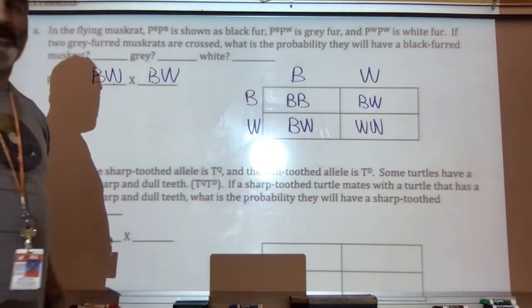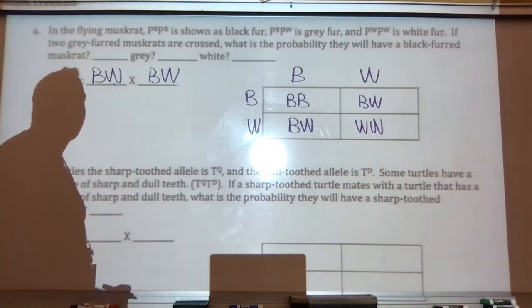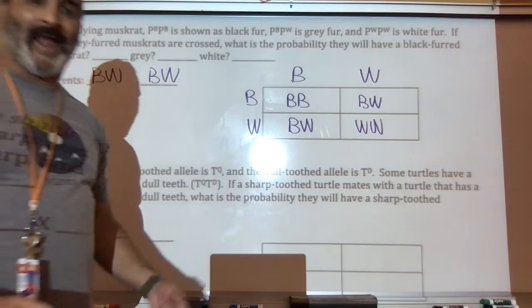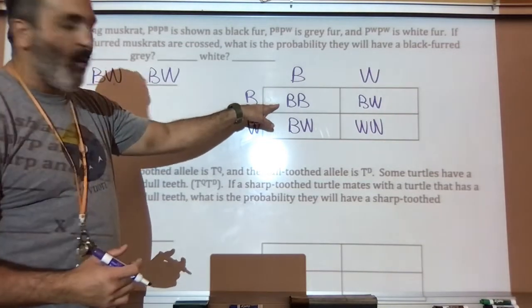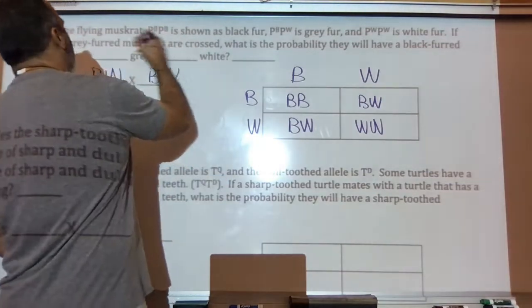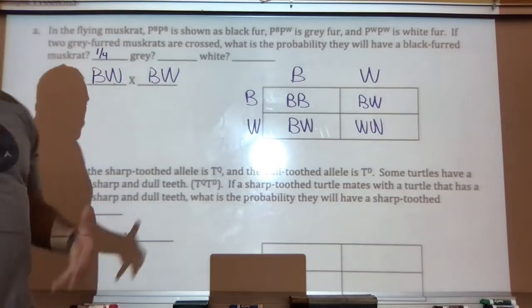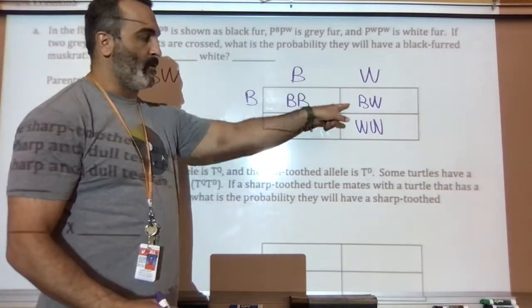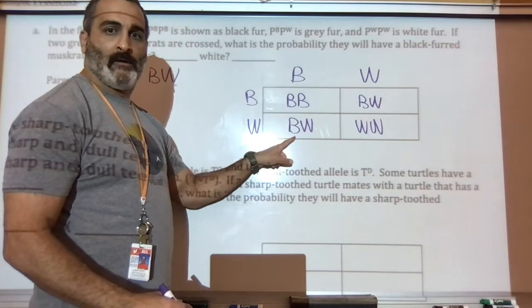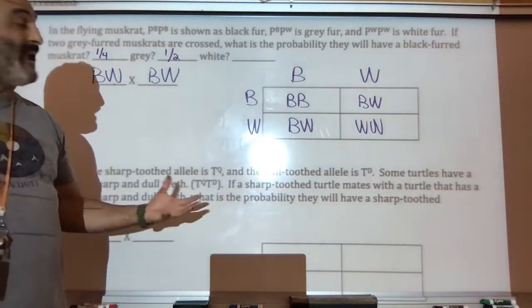That's what it ends up looking like. Here's the first question. What is the probability they will have a black furred muskrat? Well, black needs two uppercase B's. We have one of them that is black. The answer would be one-fourth. Gray. How many of them are gray? Two of them are gray. Two-fourths becomes one-half. Reduce the fraction.